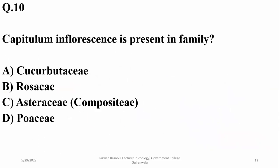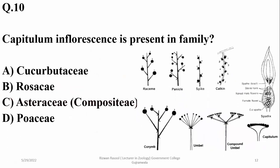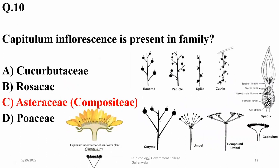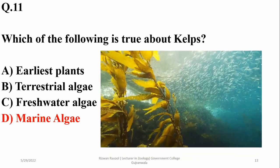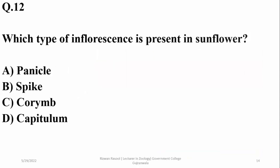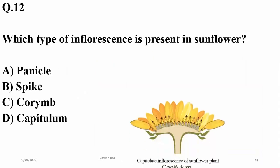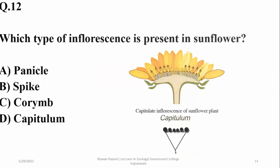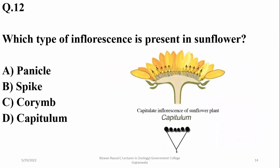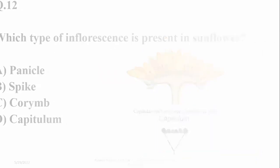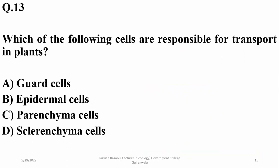Question ten: capitulum inflorescence is present in family Asteraceae (Compositae). Question eleven: kelps, or brown algae, are totally marine algae and are also the largest algae among all groups. Question twelve was about which type of inflorescence is present in sunflower — once again it is capitulum type inflorescence, so the right option was D (delta).